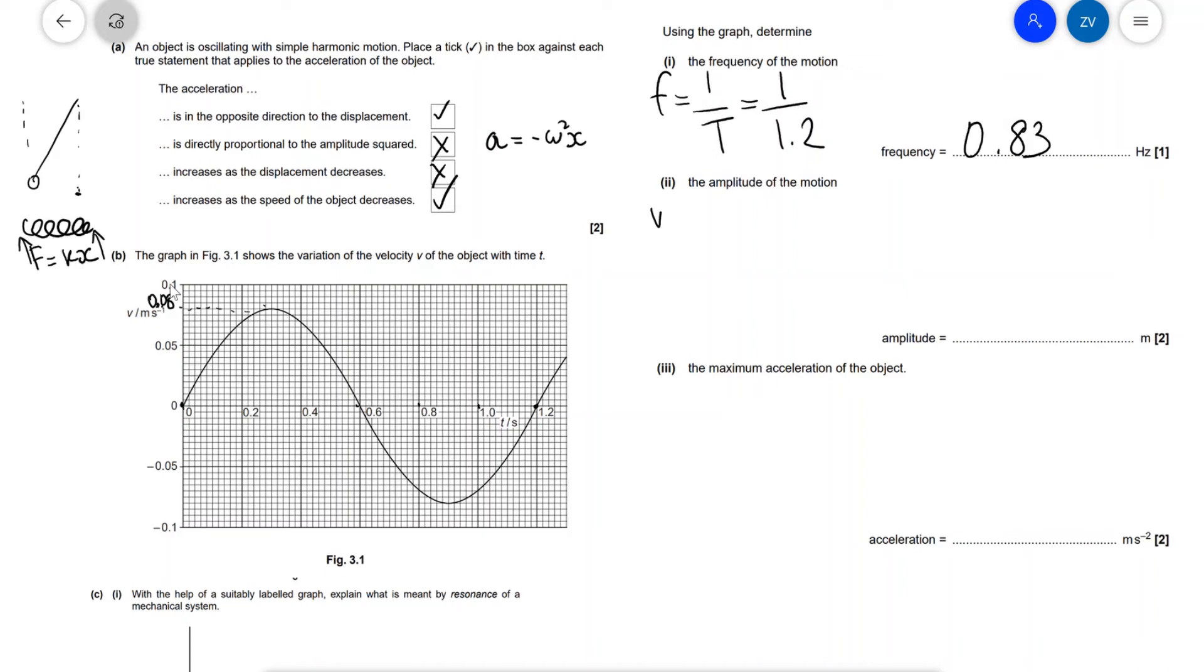Now remember the speed of a harmonic oscillator, which is what is being plotted on here, is equal to plus or minus omega times the square root of a squared minus x squared. From the graph we can actually work out the maximum speed or essentially take it out from the graph.